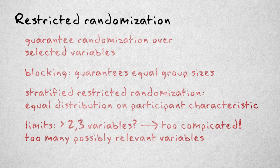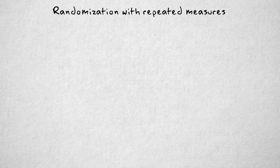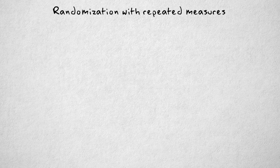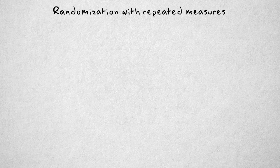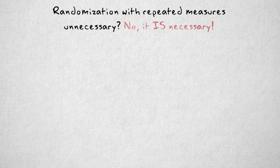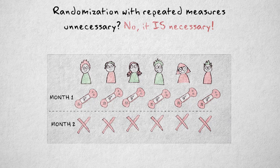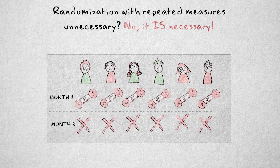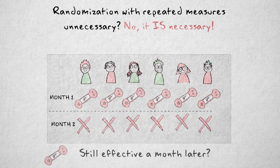I have one final remark about randomization in repeated measures designs concerning within subjects designs, where all subjects are exposed to all of the conditions. In this case, randomization might seem unnecessary, but this is not the case. If all subjects are exposed to the conditions in the same order, then any effect could be explained by maturation or some sort of habituation effect that spills over from one condition to the other.